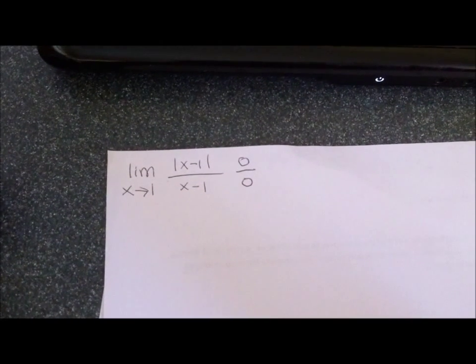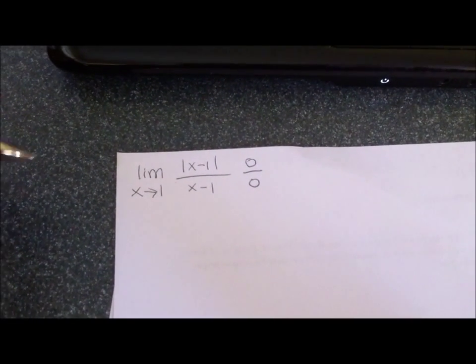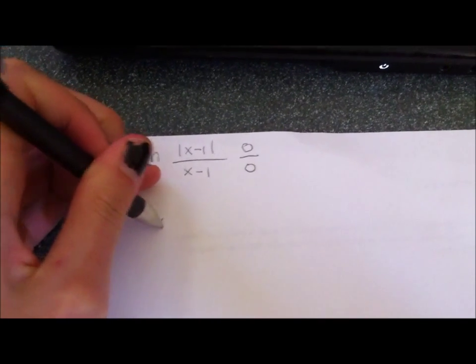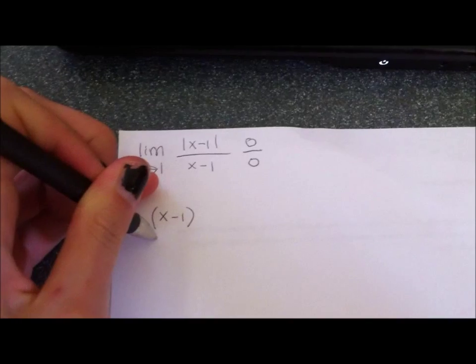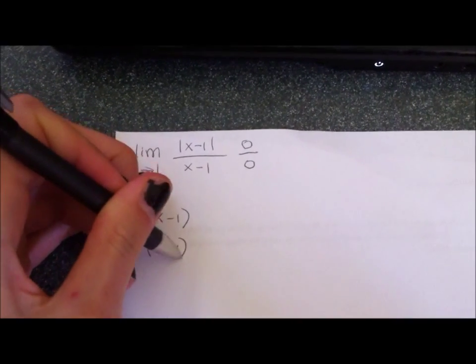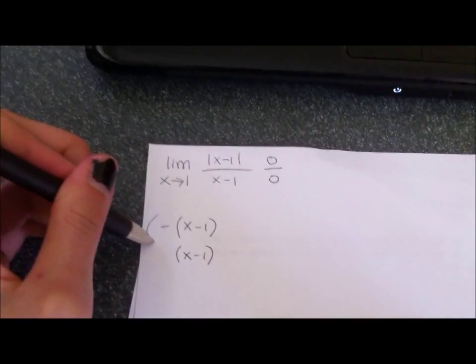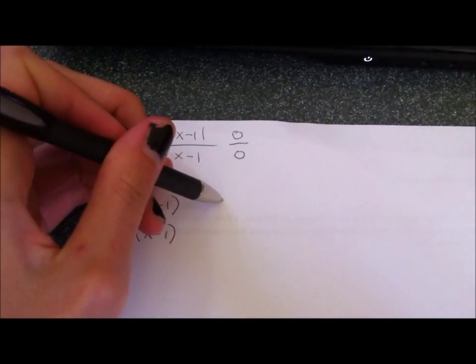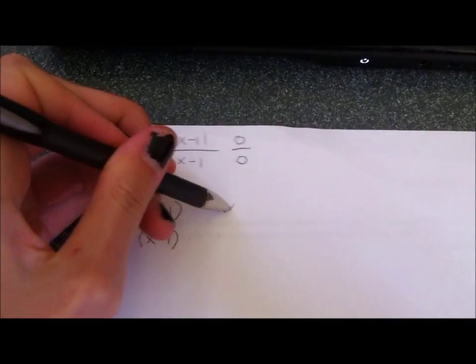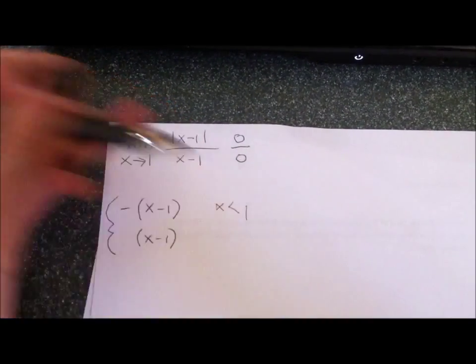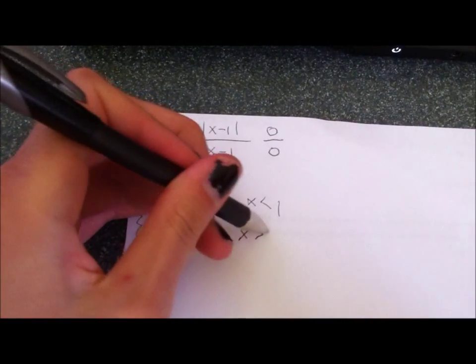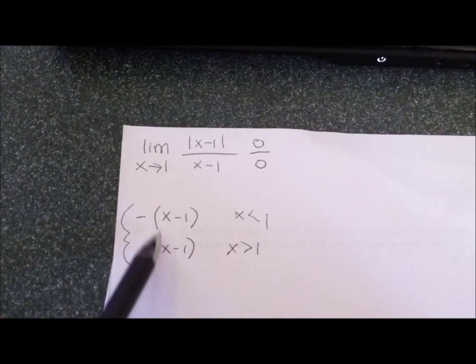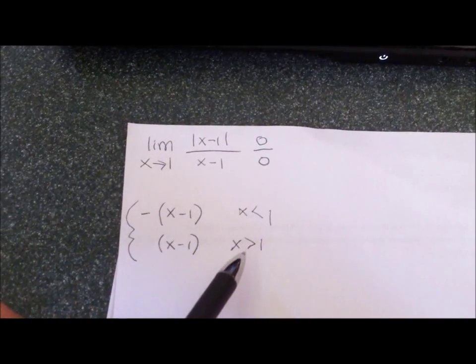We know that absolute value is just a piecewise function really, so we can write it as negative (x minus 1) and (x minus 1) positive. And we know that this is going to happen when x is less than 1, and this is going to happen when x is greater than 1. Because if we plug in 1, then it's going to be 0, same here, and we're looking at when it's positive and negative.